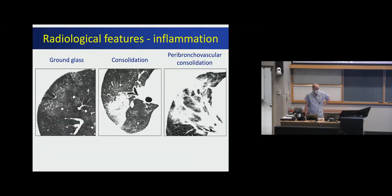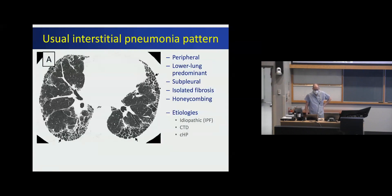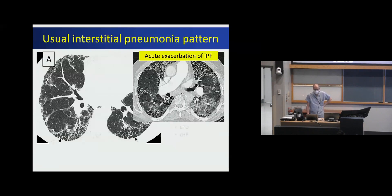The inflammatory features are ground glass and consolidation. Ground glass allows you to see the underlying lung architecture through the abnormality, whereas consolidation causes loss of that architecture but you can still see air bronchograms. A UIP pattern is characterized by lower lung predominant peripheral reticulation, traction bronchiectasis, and honeycombing — classically seen in IPF, but also in connective tissue disease and hypersensitivity pneumonitis. An acute exacerbation shows superimposed ground glass on the honeycombing, with about a 50% mortality within three months — likely even higher if the patient comes into hospital.